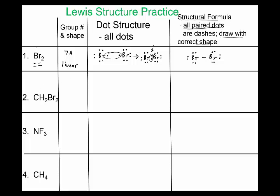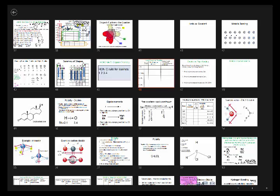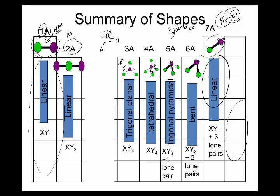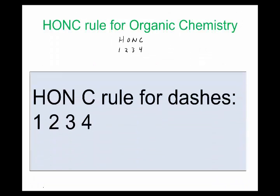For the next example, the central atom is typically written first. In this molecule it's carbon — you can tell it's the central atom because it has the most single dots. Carbon is in 4a, so going back to our summary of shapes, this is going to make a tetrahedral shape.